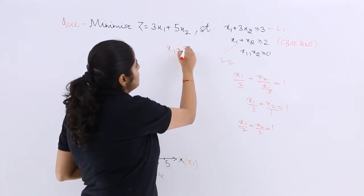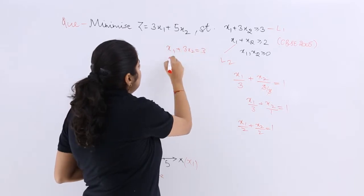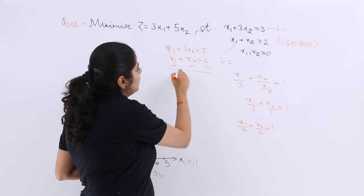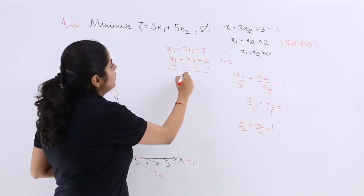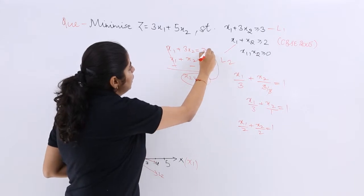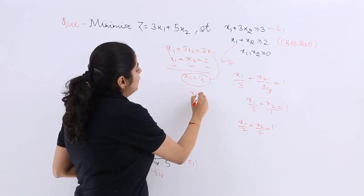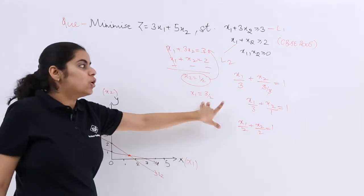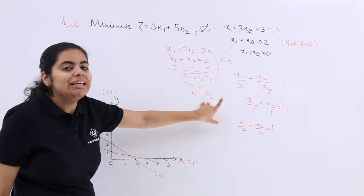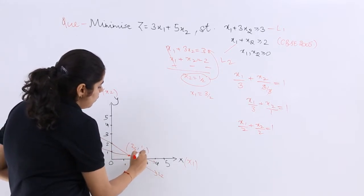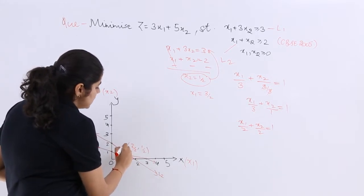So x1 plus 3x2 equals 3, x1 plus x2 equals 2. Subtracting both equations, you have x2 equals one-half. Put in any of these values, you have x1 equals three-halves. So three-halves, one-half is the intersection point. So let me name this as B.